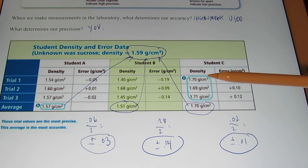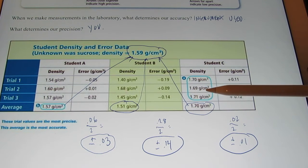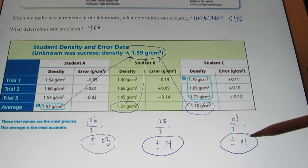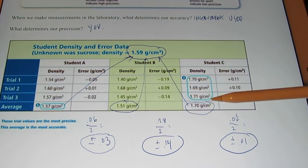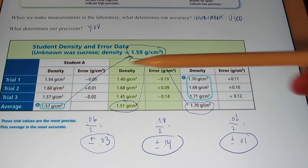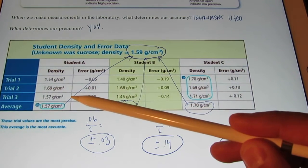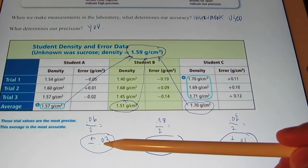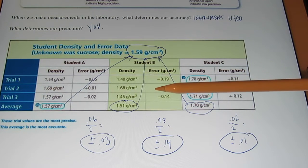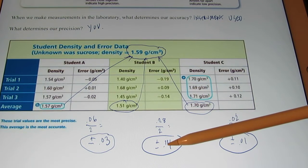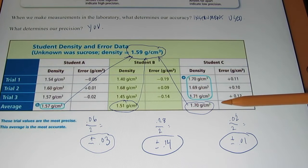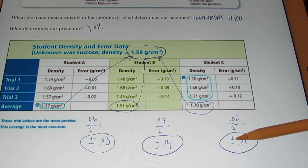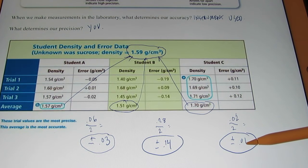So maybe in this particular case, there was something wrong with the measuring instrument that they were using, but they were being very careful when they were making those measurements because they got the same result each time. So once again, this student over here was accurate and fairly precise. This student, student B, was not accurate and not precise. And student C, well, they weren't very accurate, but they did have very nice precision.